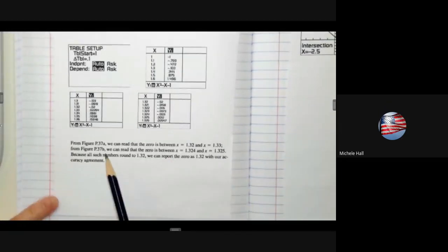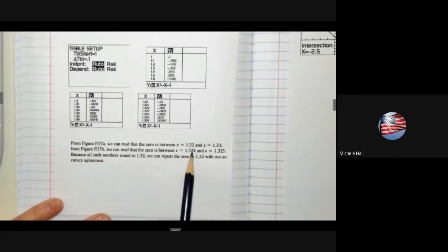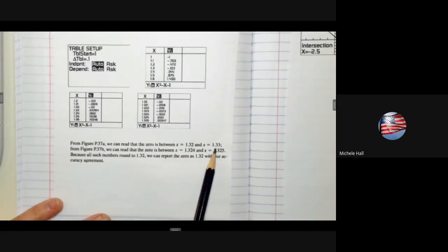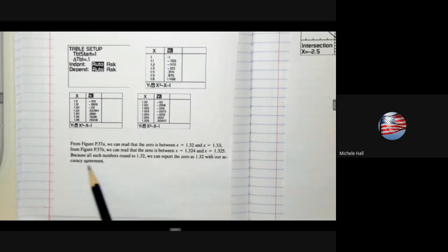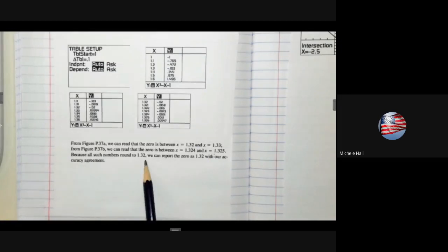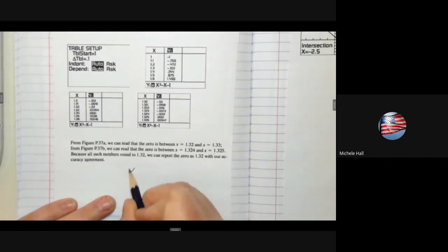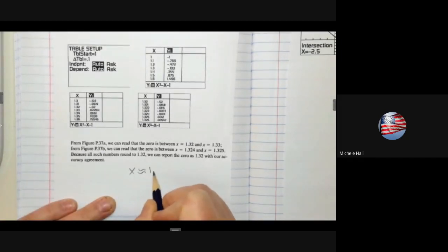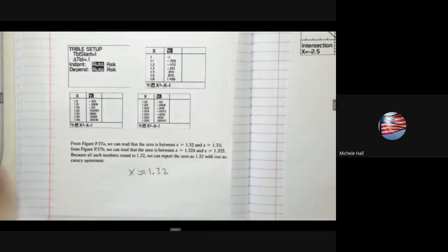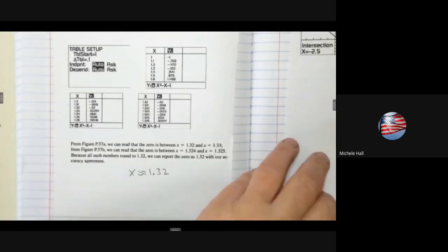Here in the final part, it says we saw that it was 1.32 and 1.33, and so we zoomed in even more between 1.324 and 1.325. We can see because all such numbers round to 1.32, we can report the zero as 1.32, so x is approximately 1.32. That takes care of example 5.